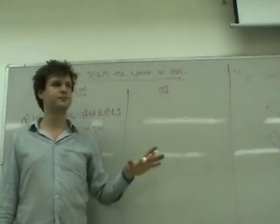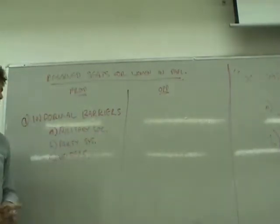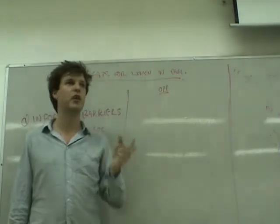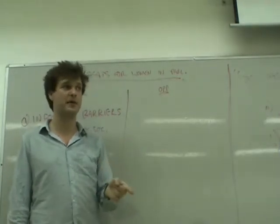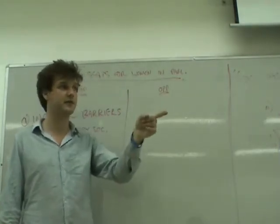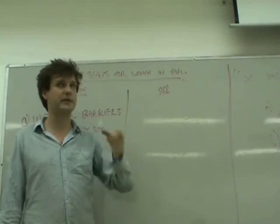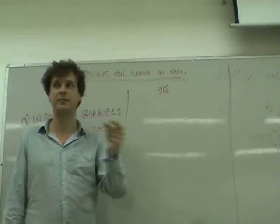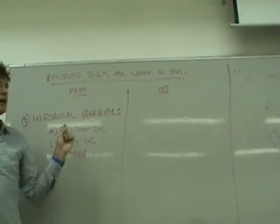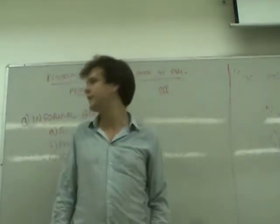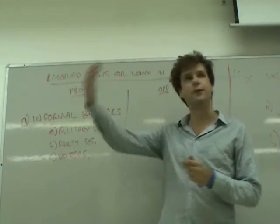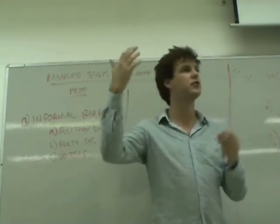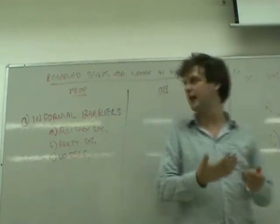So, this argument doesn't rely on there being differences between men and women, in the way the previous argument did. The previous argument relied on there being differences in interests between men and women. This argument does not. And this argument is second wave insofar as it relies on informal barriers, like things like the construction of female identity and all the rest of it. You could add to this role models, right?